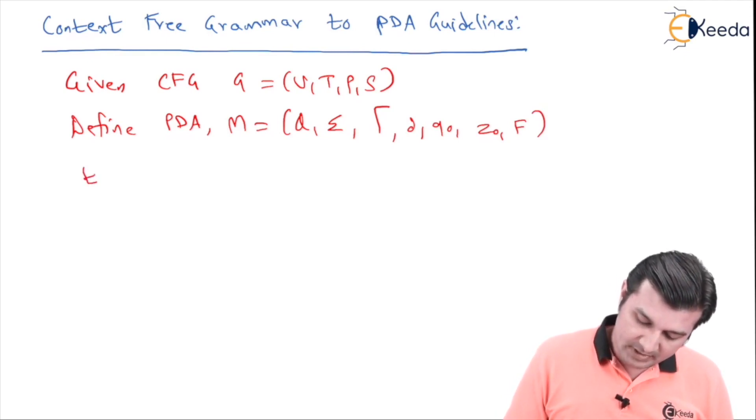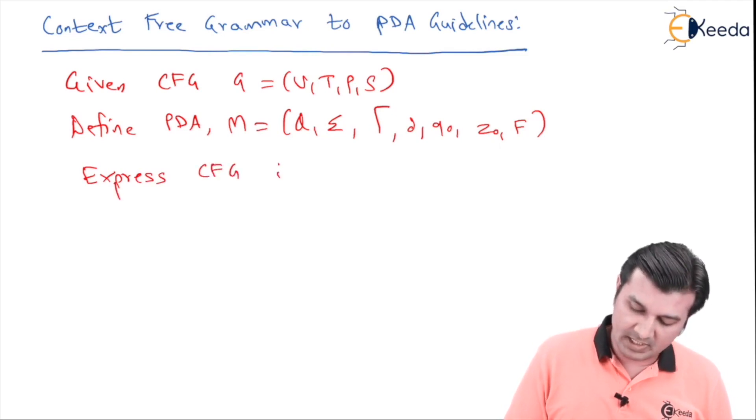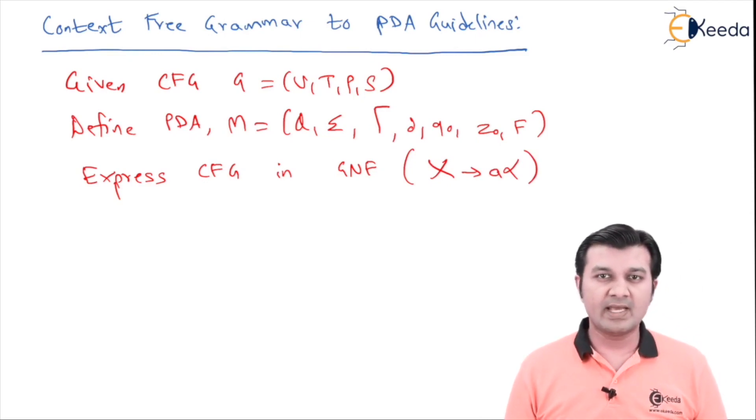First and foremost thing, we are going to express the CFG in the GRVBACK normal form, which says all the production should be of the form X gives A alpha, where A is going to be a terminal and alpha is going to be in sentential form, that is any combination of variables or terminals.